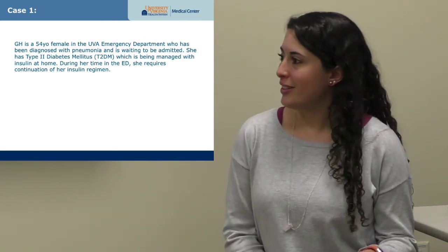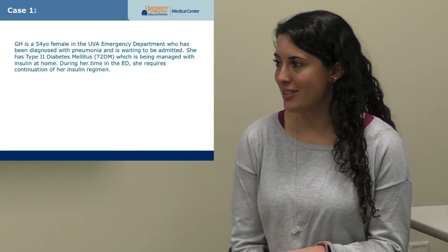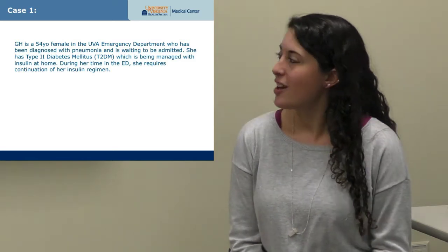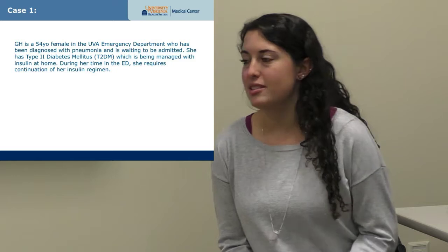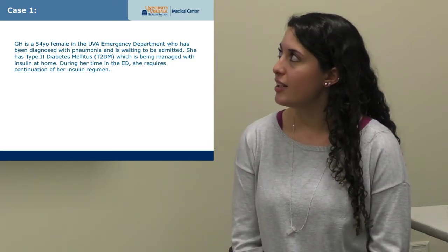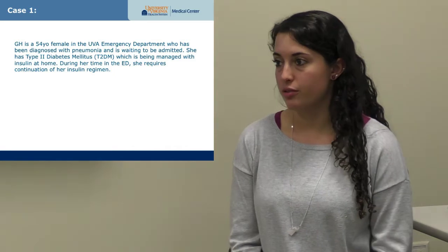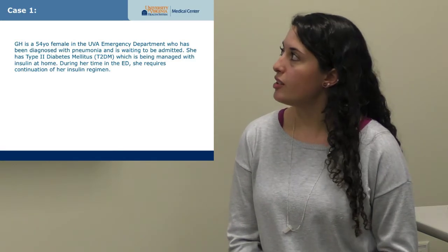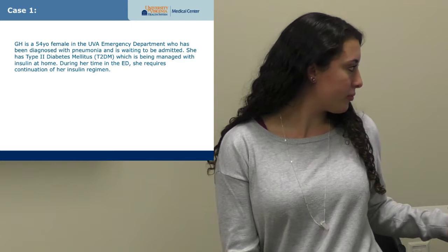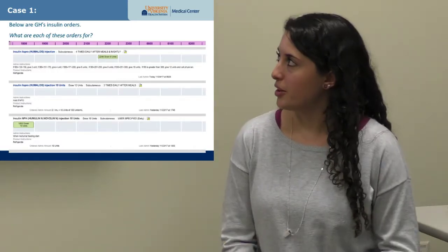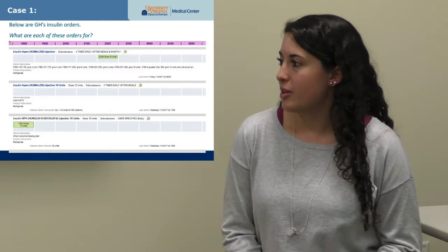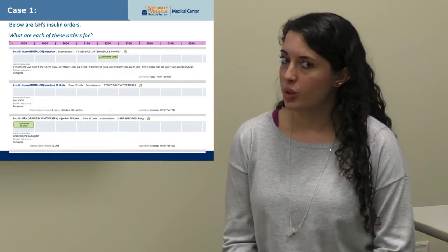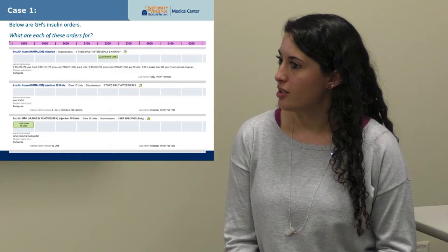My presentation is a little different — I have the cases before we talk about the actual information, so feel free to guess and we'll discuss the answers afterward. Our first case is G.H., a 54-year-old female who comes into the ED diagnosed with pneumonia, waiting to be transferred to the floor. Before she goes up, we need to manage her diabetes in the ED. Looking at her insulin orders, can you identify which are basal, bolus, correctional, or sliding scale?